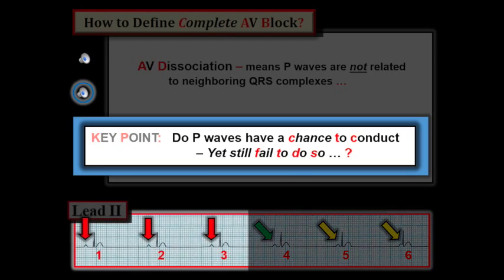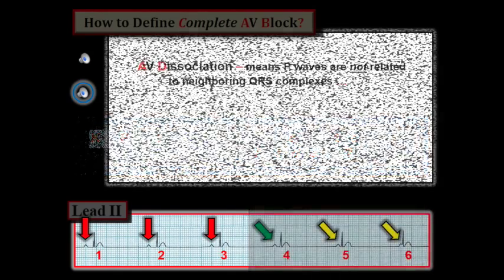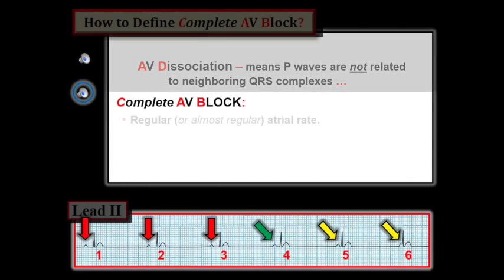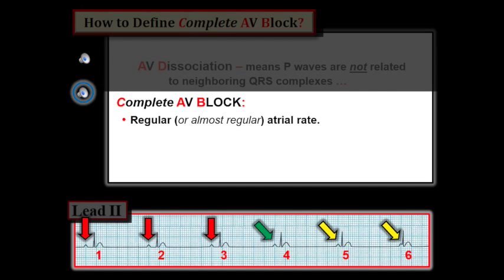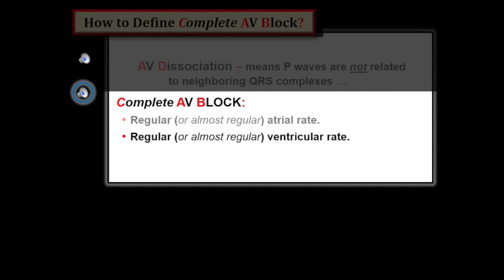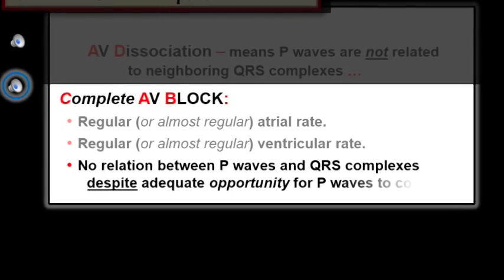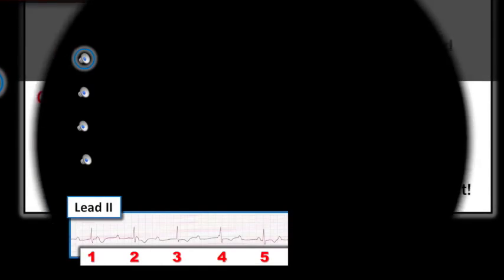This is the difference between AV dissociation that is transient due to slowdown of the sinus rate or acceleration of a junctional focus, versus complete AV block, in which none of the P-waves conduct despite being given more than adequate opportunity to do so by occurring at all different points within the cardiac cycle. Although the P-waves preceding beats five and six are not being conducted, these P-waves never have a chance to conduct because their PR interval is just too short. Earlier in the tracing, when given a chance (red arrows), P-waves conducted just fine. Therefore, there is AV dissociation, but we have no idea if any AV block is present, because we never see P-waves that should conduct and don't. We define complete AV block as a regular atrial rate, a regular ventricular rate, but no relation between P-waves and neighboring QRS complexes despite more than adequate opportunity for P-waves to conduct.